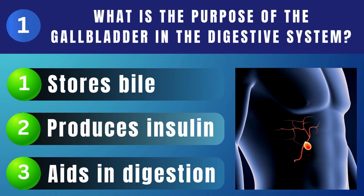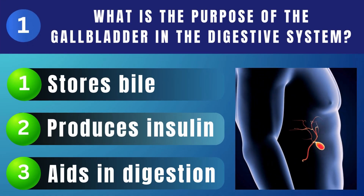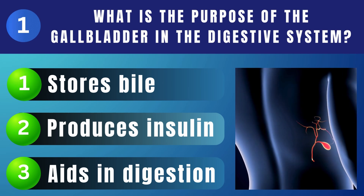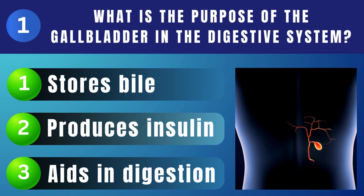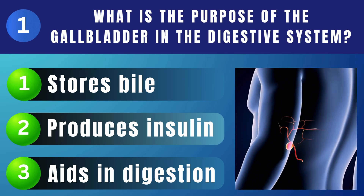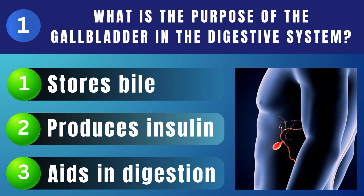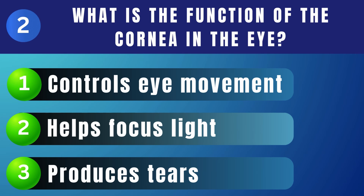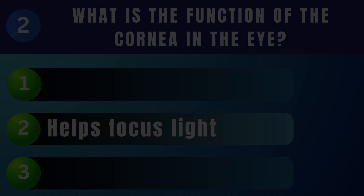What is the purpose of the gallbladder in the digestive system? Stores bile. What is the function of the cornea in the eye? Helps focus light.